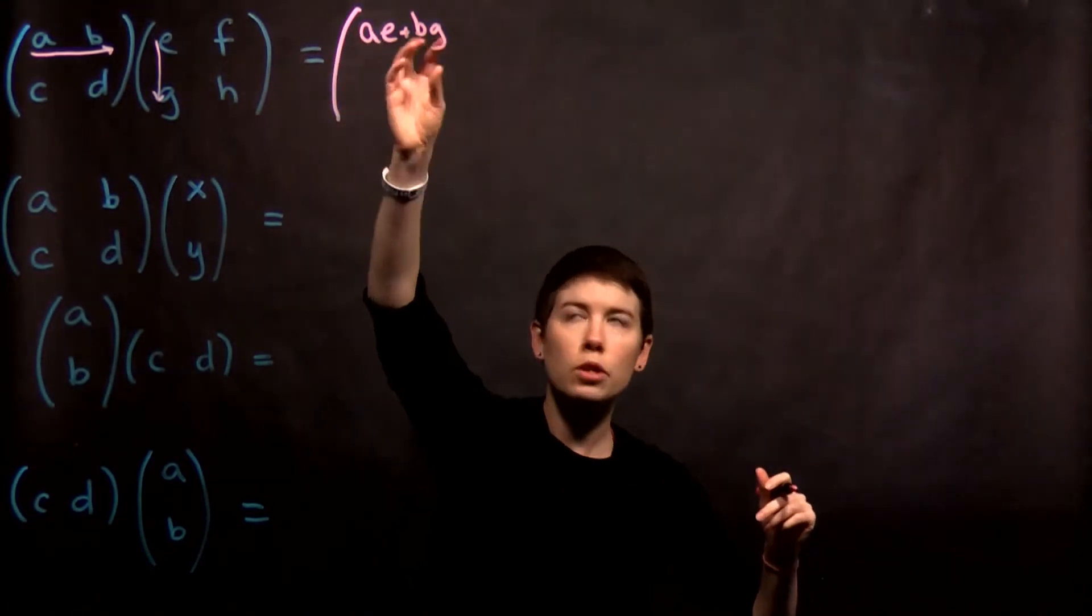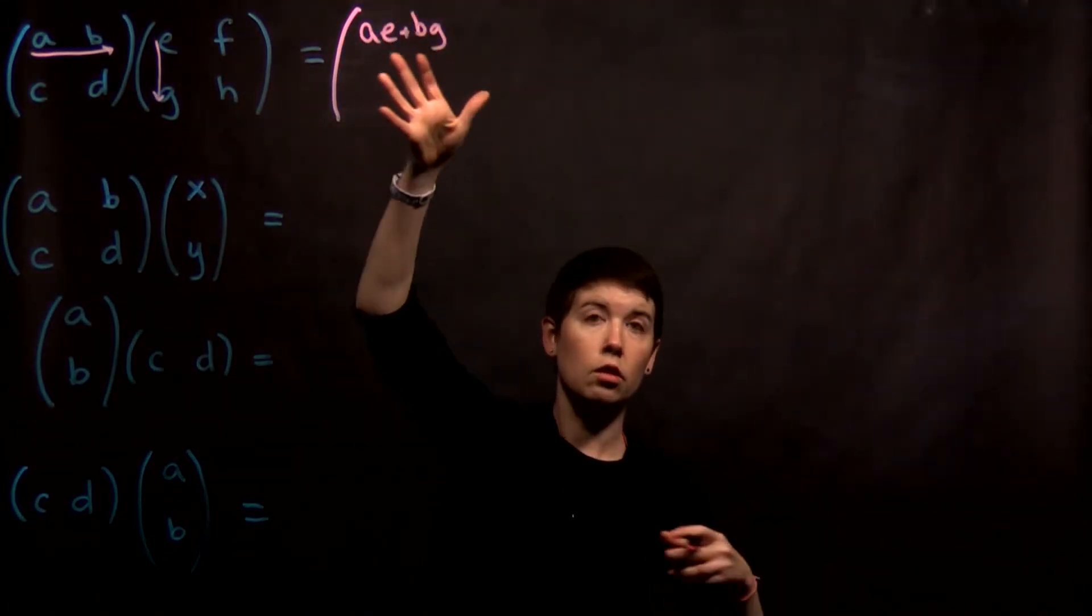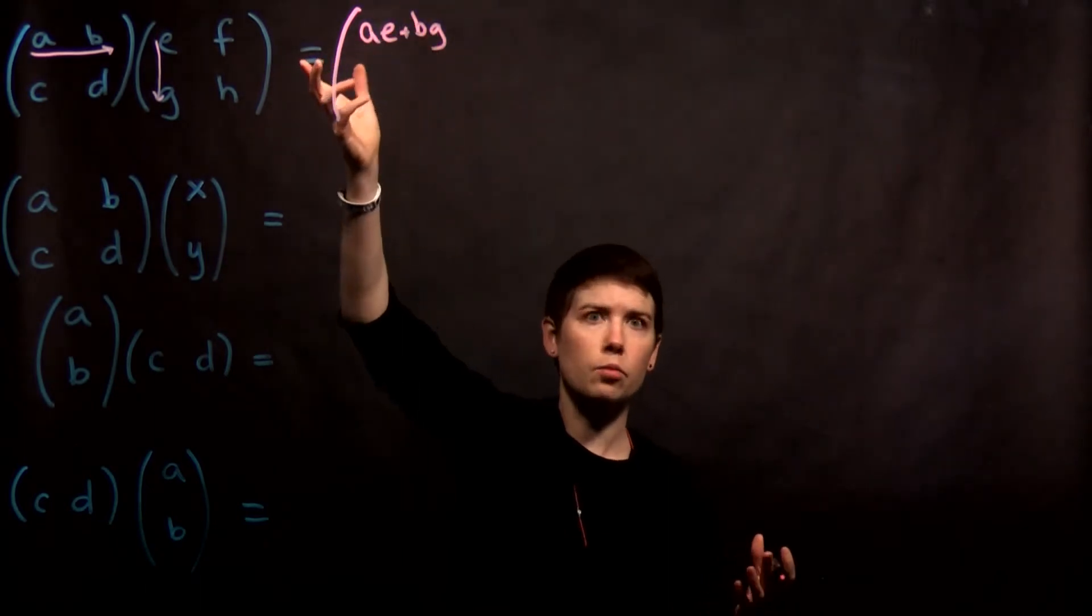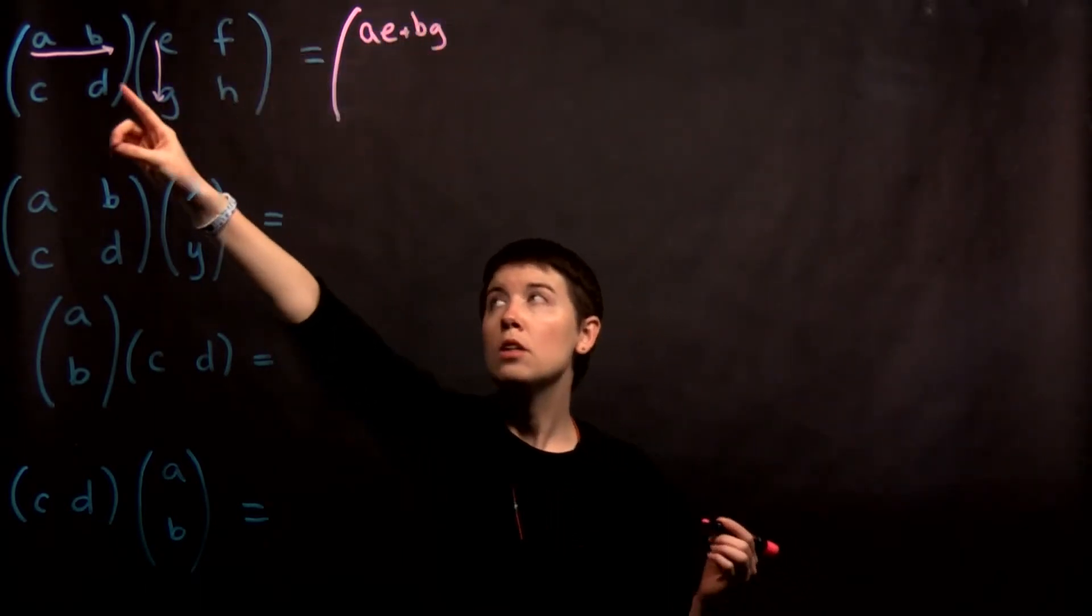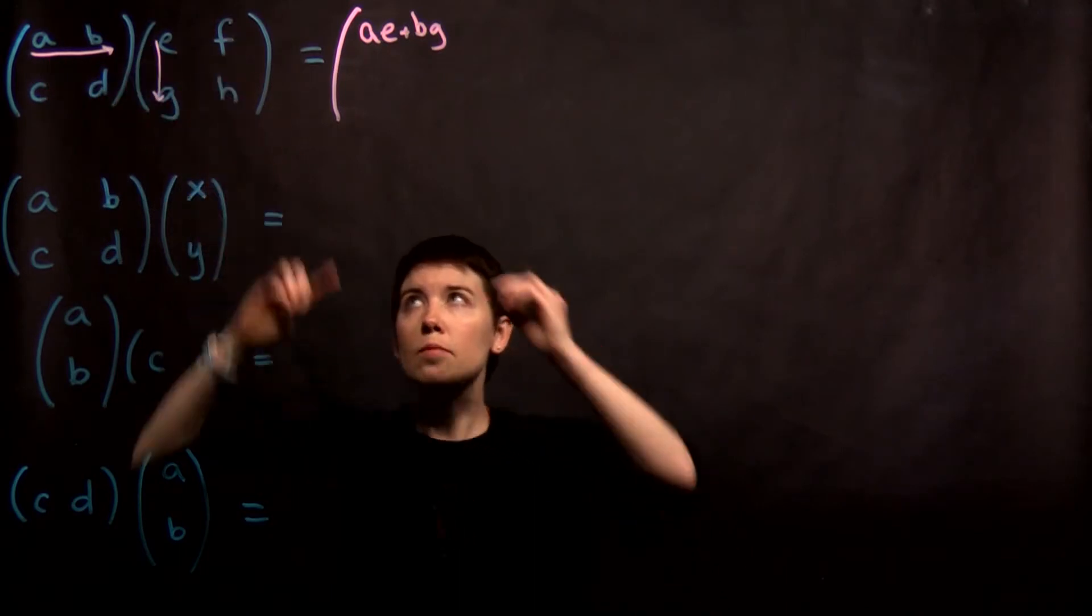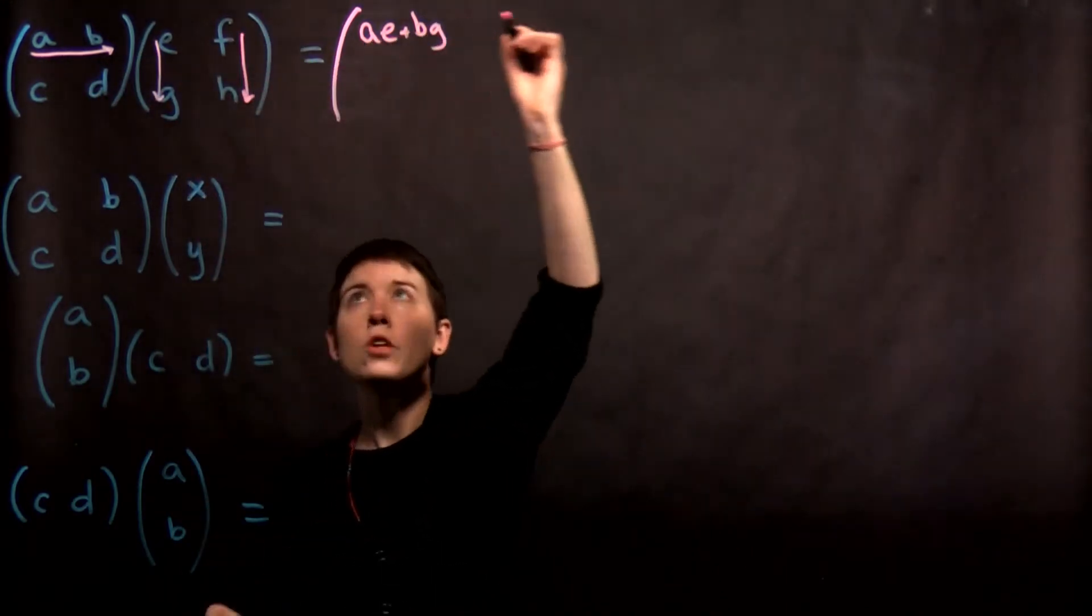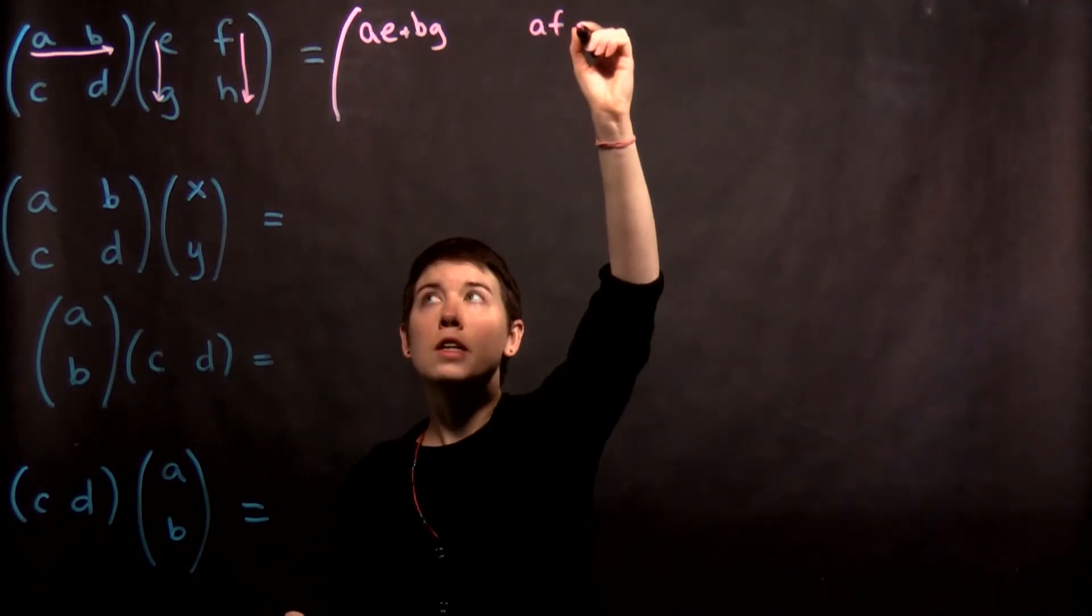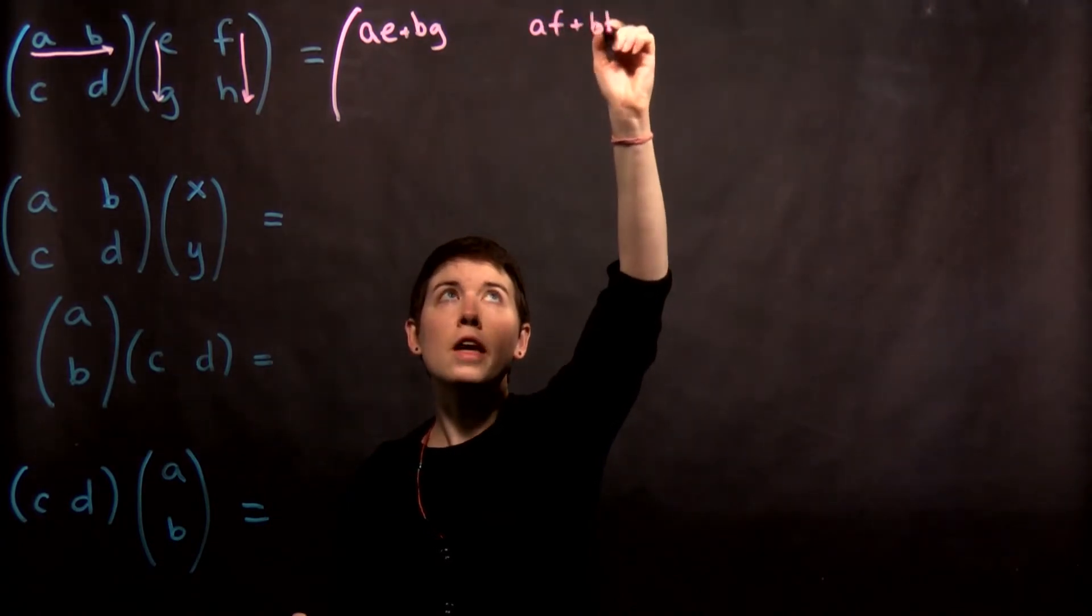So you can imagine that these are numbers and you would get one integer here, or in this case they're variables, but this is one entry. The second entry then is going to be the first row times the second column. So that's a f plus b h.